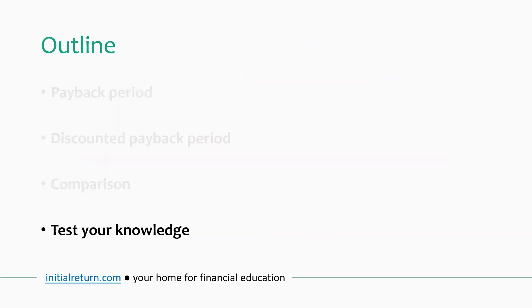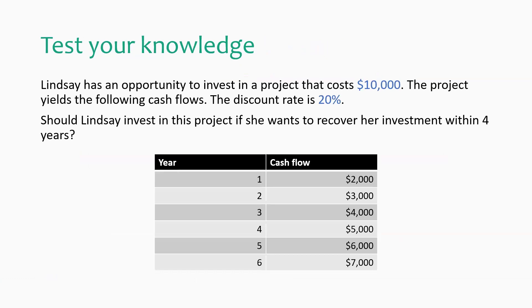The final part of this video is an exercise for you to test your knowledge. The question and solution are provided in the video description — it's on the same page as the payback period calculator. The question is: Lindsay has an opportunity to invest in a project that costs $10,000. Here are the cash flows of that project, and the discount rate is 20%. Should Lindsay invest in this project if her objective is to recover her investment within four years? That's it for this tutorial on the payback period. I hope you found it useful, and I look forward to seeing you in the next video. Bye for today.